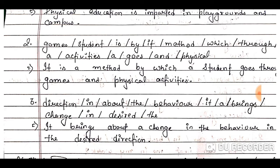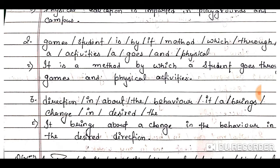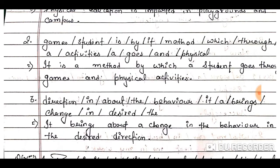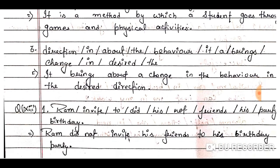Question number two: games / student / is / by / it / method / which / through / a / activities / a / goes / and / physical. The correct answer is: It is a method by which a student goes through games and physical activities.